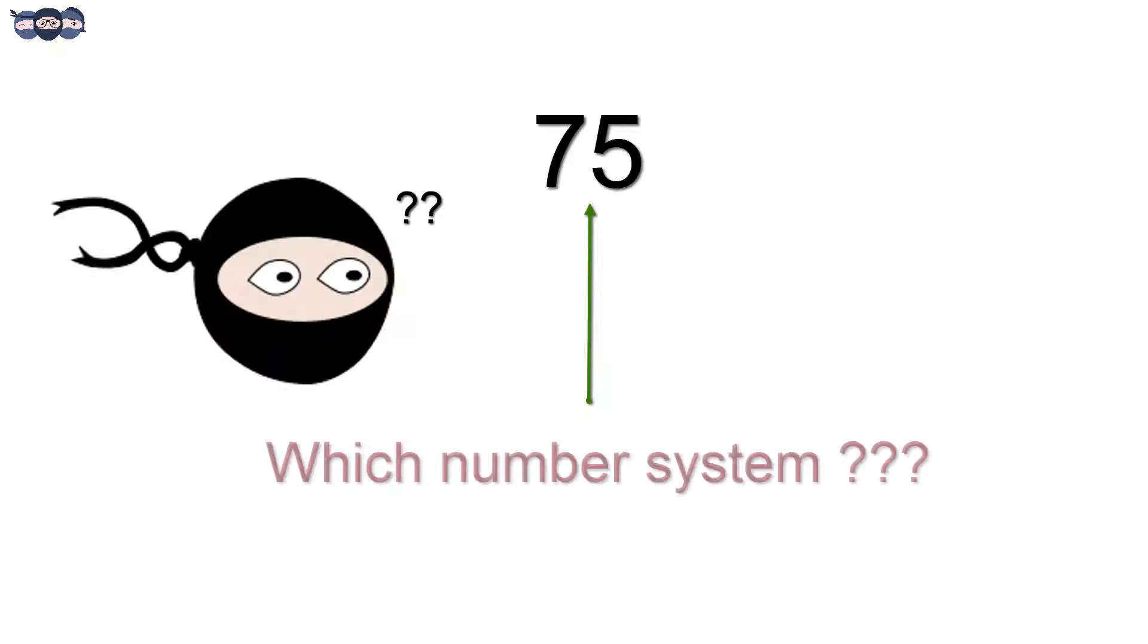Let us understand how numbers are represented. How will one differentiate the number written or displayed is in which system? To avoid confusion, the number is enclosed in the bracket with radix as subscript.